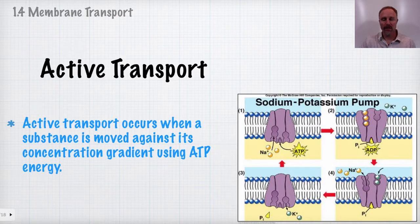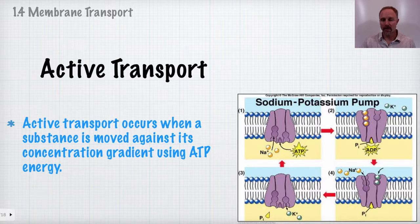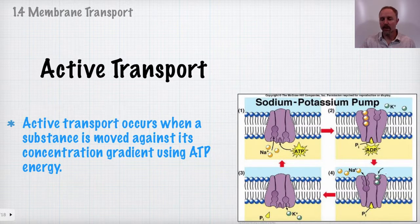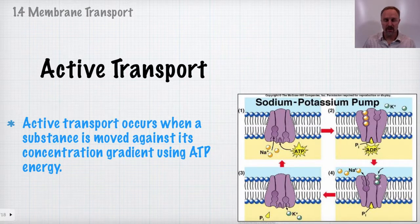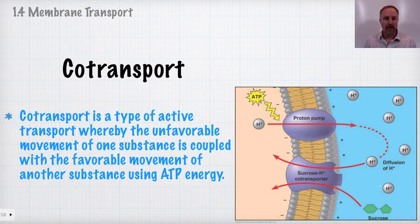Active transport involves ATP energy to move substances across the membrane. A classic example is the sodium-potassium pump: it hydrolyzes ATP to move three sodium ions out of the cell and two potassium ions in. This three-for-two exchange builds up both a concentration gradient and a charge difference — the outside becomes more positive relative to the inside. This electrochemical gradient is critical for functions like nerve signal transmission and action potentials.